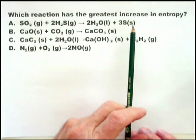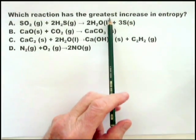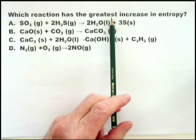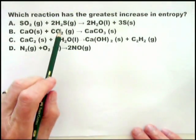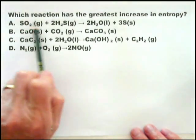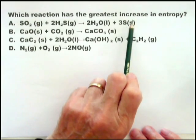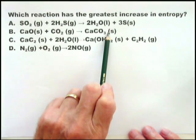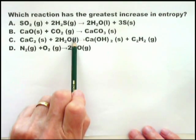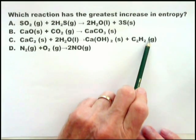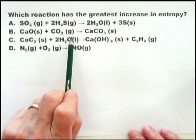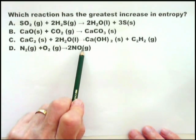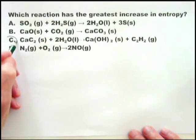Another question where we're looking for an increase in entropy — again they say the greatest increase, suggesting there might be two increases. Immediately we can see the first one is negative because gas is on the left and liquid and solid on the right. A solid and a gas going to a solid — also negative. A solid and a liquid going to a solid and a gas — that's an increase in entropy, because as soon as you produce a gas where on the left were simply solids and liquids, that is a positive change in entropy. And two molecules going to two molecules — that's zero change in entropy. Therefore C is the only possibility.